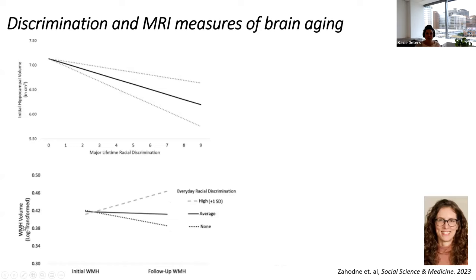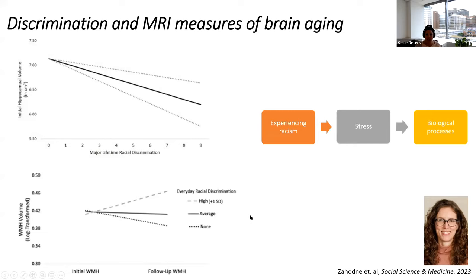A very recent publication from Dr. Laura Zahodny using data from Y-CAP looked at discrimination and MRI measures of brain aging in over 221 non-Hispanic Black older adults. This study showed that lifetime discrimination was associated with lower hippocampal volume, while everyday racial discrimination was associated with greater hippocampal volume. This provides an example of how experiencing racism or discrimination can lead to stress, which can have an impact on biological processes — including brain regions specific to Alzheimer's disease.